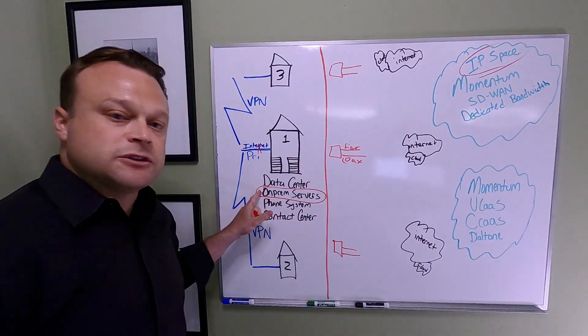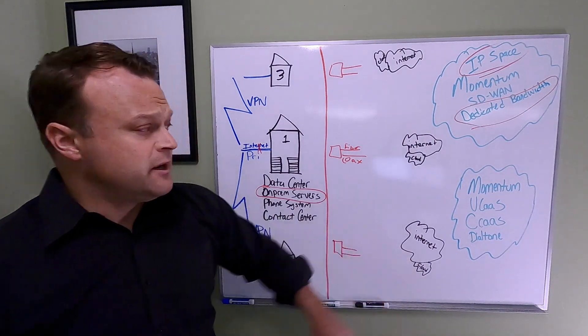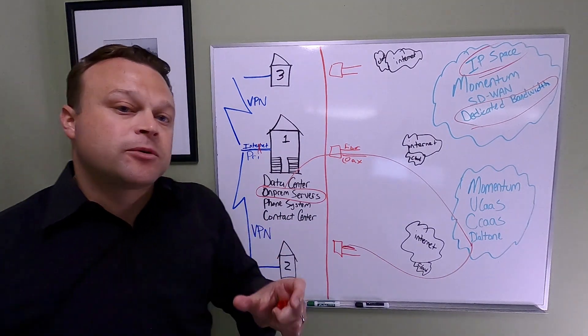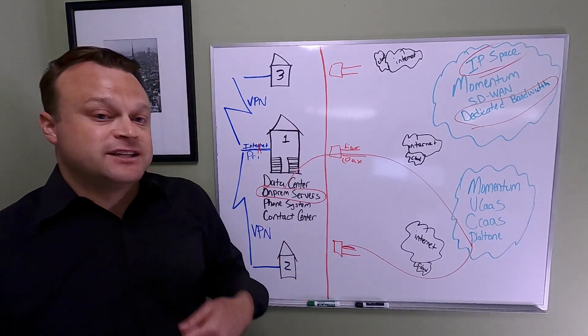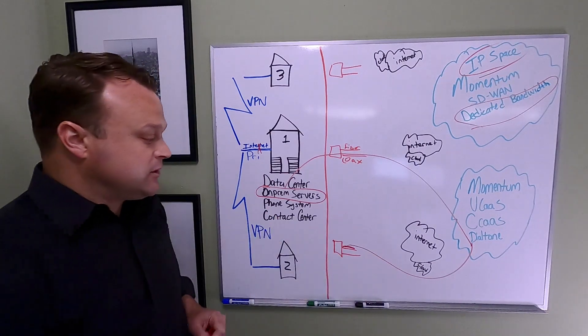The primary location has a PRI handling all their dial-tone in and out and internet. If they lose a VPN to one of the locations, that location can't service customers, can't receive calls, can't get to the internet. If the primary PRI goes down, they lose all dial-tone to all the locations.